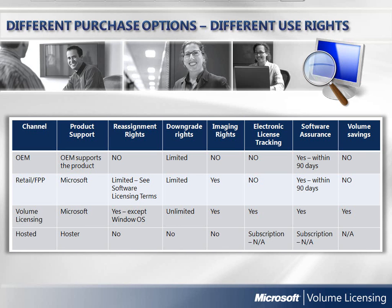Retail licenses are generally allowed a one-time reassignment. Volume licensing software can be reassigned from one PC or server to another, offering increased flexibility, but cannot be transferred within 90 days of the last reassignment. Downgrade rights are the end user's ability to acquire the most recent version of Microsoft software but continue to run a previous version until the user is ready to upgrade. Downgrade rights are limited to certain versions and products with OEM and retail, and are unlimited with volume licensing. Imaging rights, or re-imaging rights, refer to the ability to create one standard image and deploy it across your organization, creating consistency throughout all your desktops.